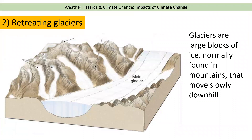The second impact of climate change is retreating glaciers. Before we begin, we need to understand what a glacier is. A glacier is a large block of ice — found in mountain ranges — and they move very, very slowly downhill due to gravity, sometimes only a few centimetres per year.